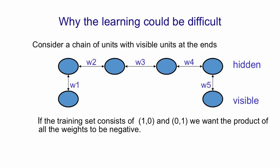For example, if all the weights are positive, turning on W1 will tend to turn on the first hidden unit, and that will tend to turn on the second hidden unit, and so on, and the fourth hidden unit will tend to turn on the other visible unit. If one of those weights is negative, then we'll get an anticorrelation between the two visible units.